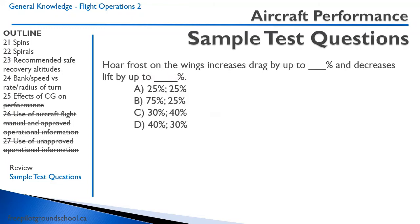Classic exam question: Frost on the wing increases drag by up to blank percent and decreases lift by up to blank percent. This is a pure memory question. The answer is 40 percent increase in drag and 30 percent decrease in lift.